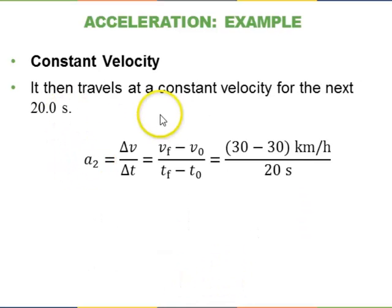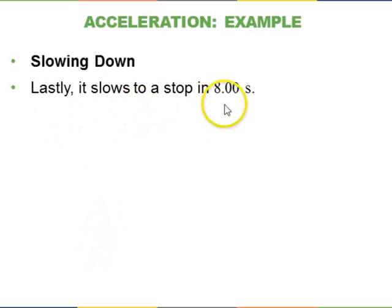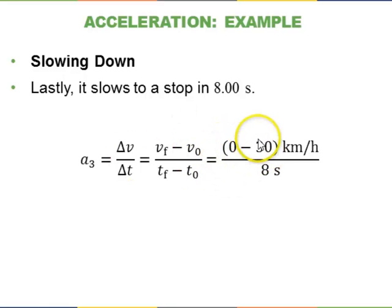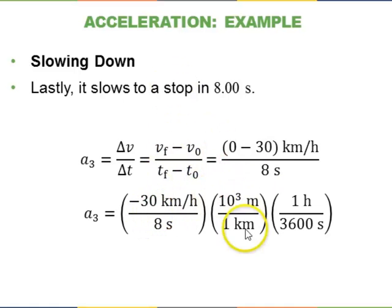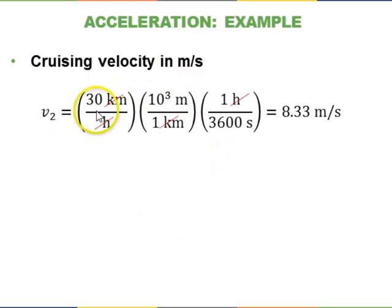For A2: traveling at constant velocity of 30 km/h means V-final and V-initial are the same, giving zero acceleration — constant velocity equals zero acceleration. For A3 (slowing to stop): V-initial is 30 km/h, V-final is zero, over 8 seconds. Converting units the same way: negative 30 times 1000 divided by 8 times 3600 gives negative 1.04 meters per second squared. Note that 30 km/h equals 8.33 meters per second.